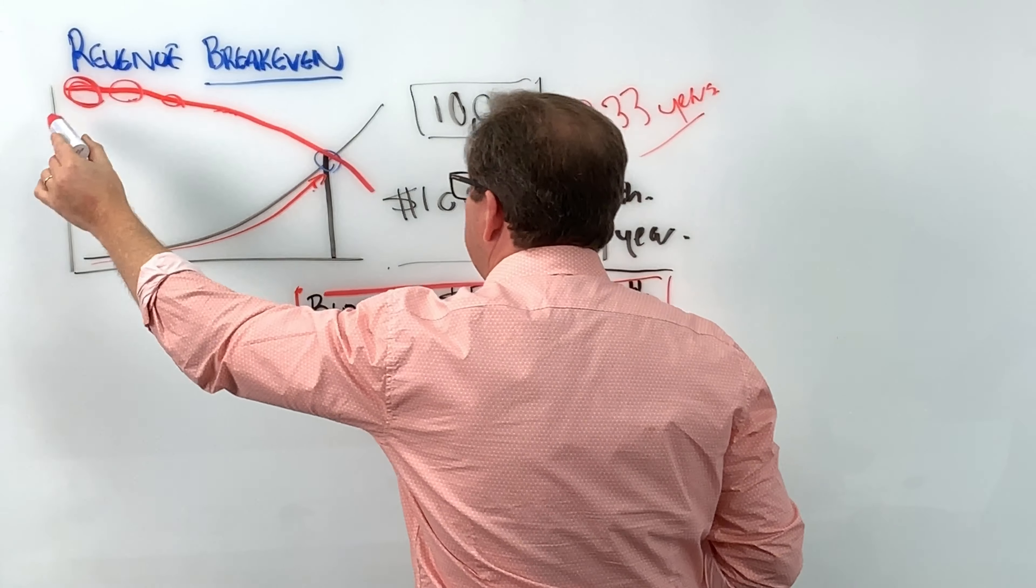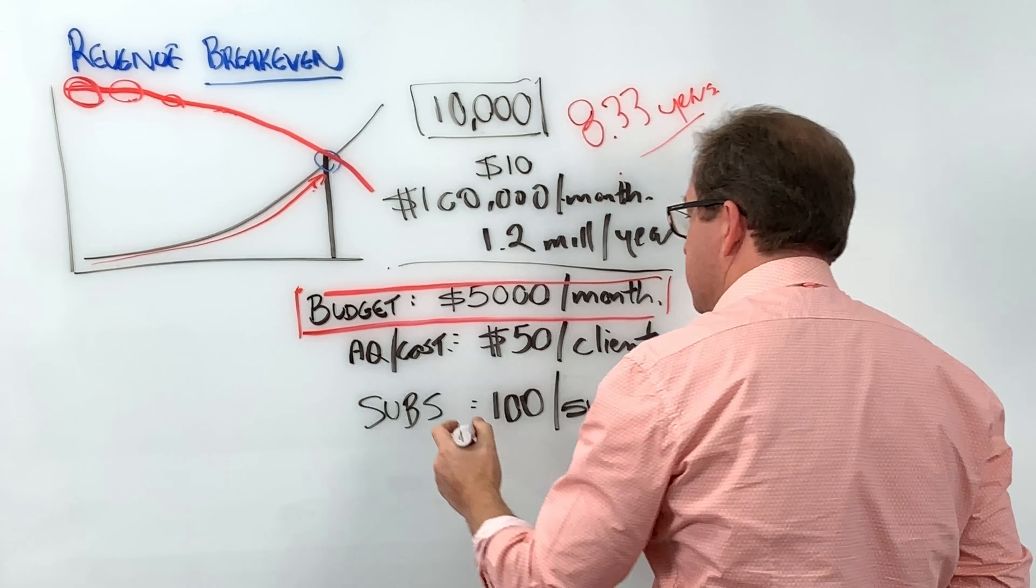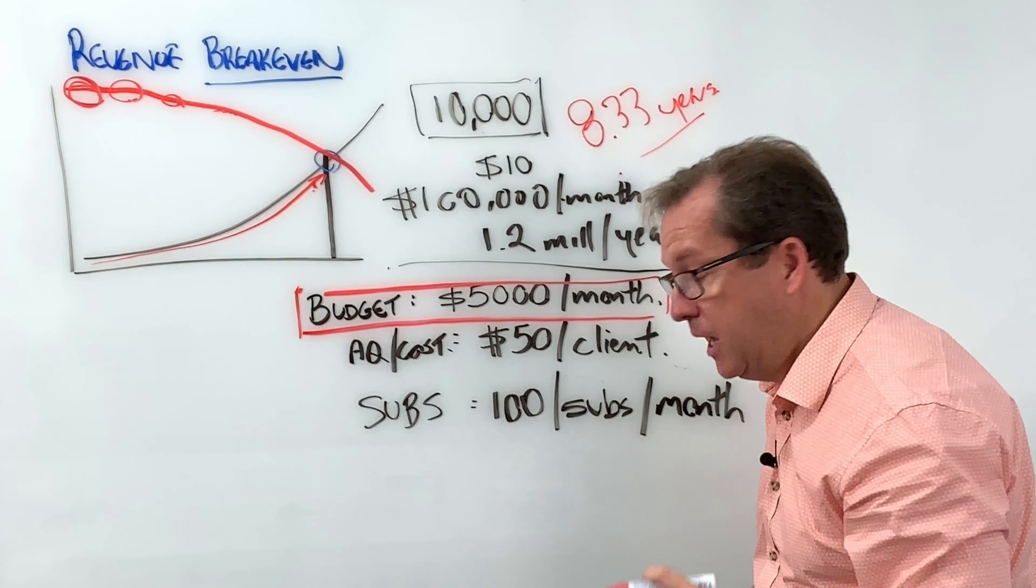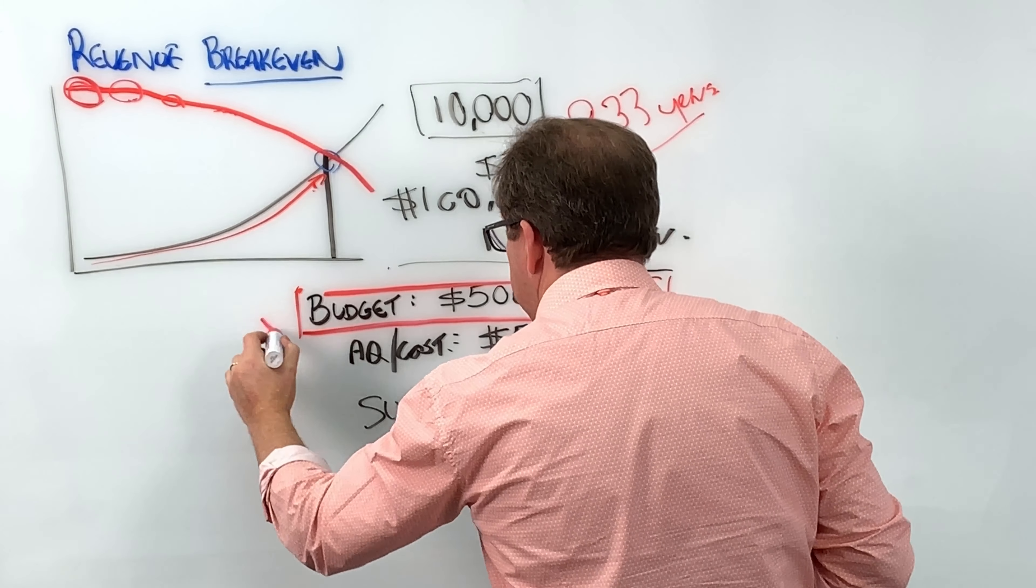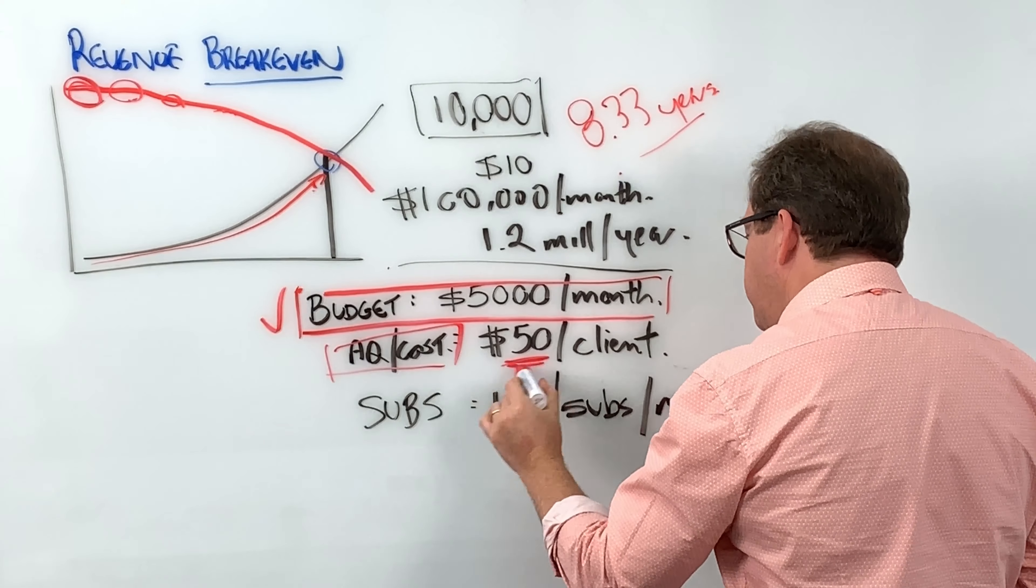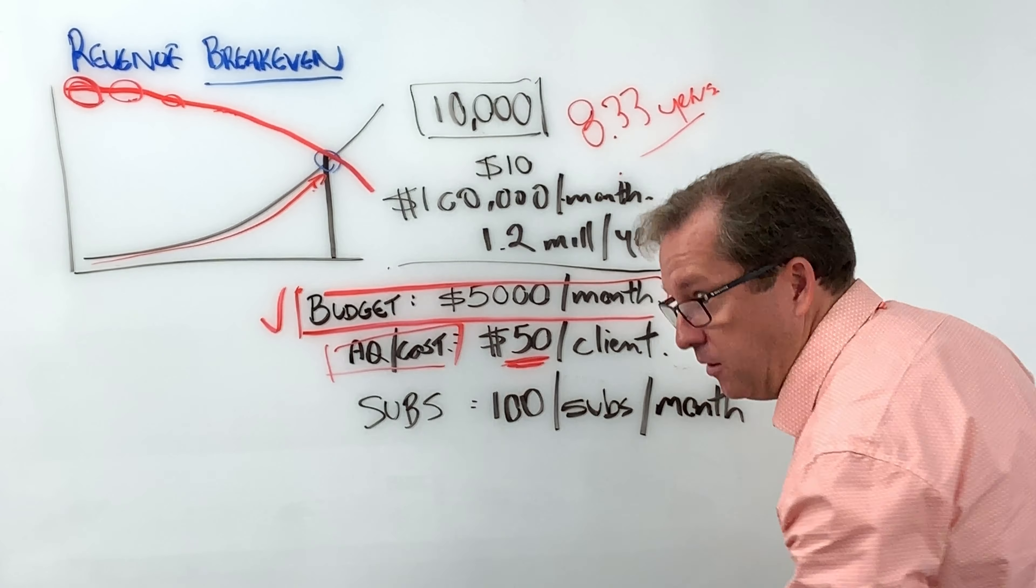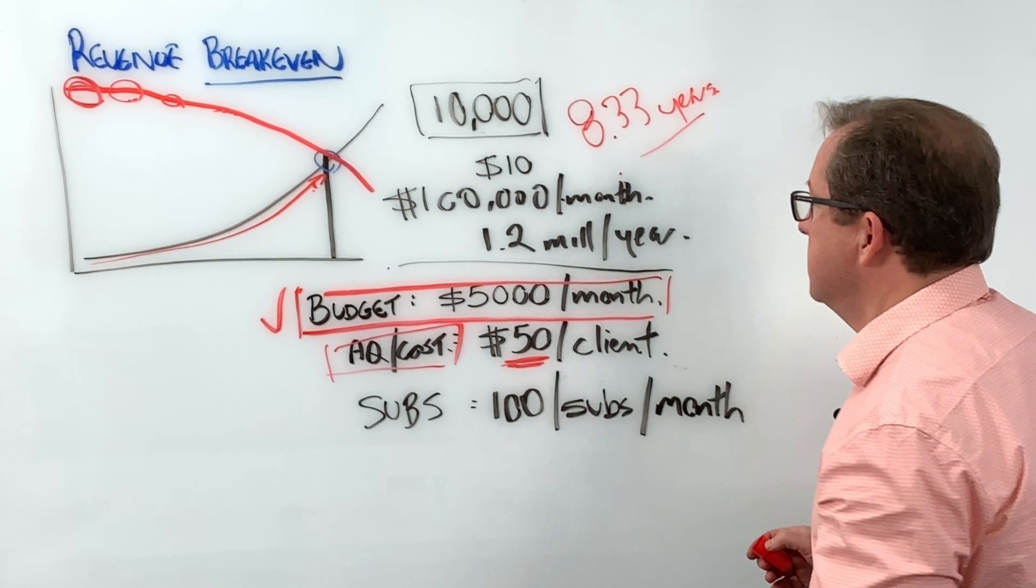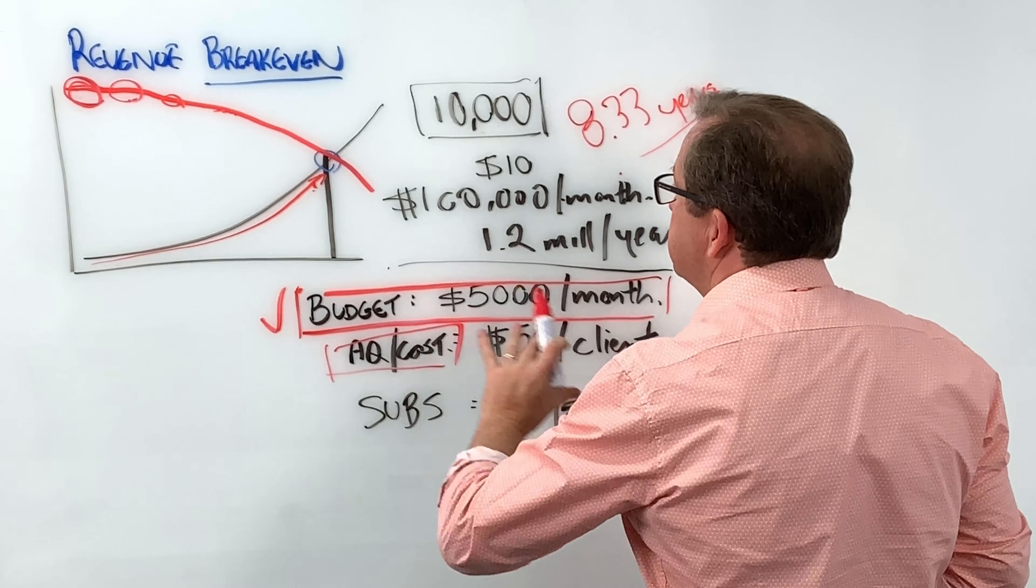This is a really good visual of how that works. So the only levers you really have are increasing your budget or reducing your acquisition cost from $50 per acquisition to $10 per acquisition or $5. So there are your numbers to think about.